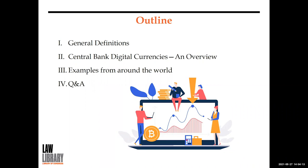A core instrument by which central banks achieve these objectives is by providing central bank money. Traditionally, central banks have limited access to digital account-based central bank money — known as reserves or settlement balances — to banks and certain financial institutions. Physical central bank money, i.e., cash, is widely accessible to the public. But in some jurisdictions like Sweden, cash usage is decreasing with the possibility of its complete disappearance, which would mean the public no longer has wide access to central bank money.